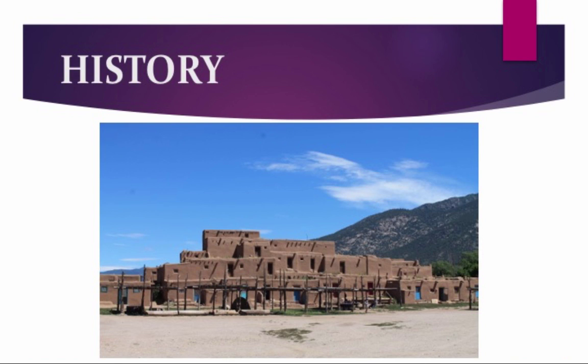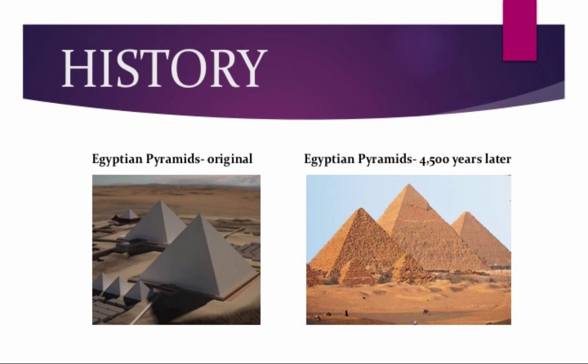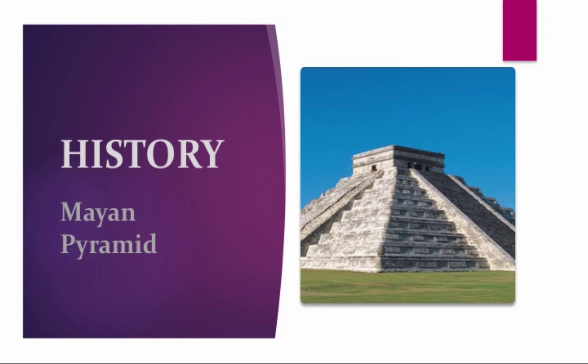This is the main building of an Indian Pueblo in New Mexico. The Indian tribe pays to have this building resurfaced every year to keep it looking nice, and each family is responsible for resurfacing their own portion every year. On the right is a photo of the Egyptian pyramids as they look today. On the left is what they were believed to have looked like at the completion of construction approximately 4,500 years ago. This is a photo of a Mayan pyramid. The plaster on this one seems to not be as eroded as the Egyptian pyramids.